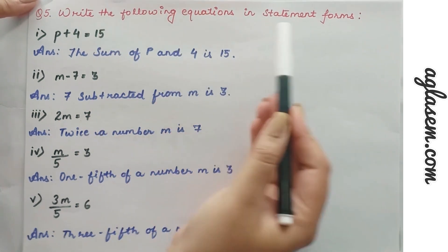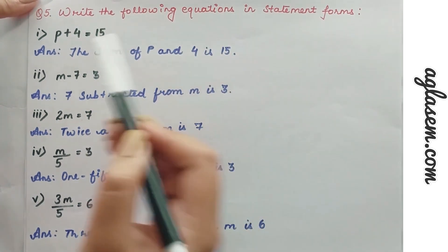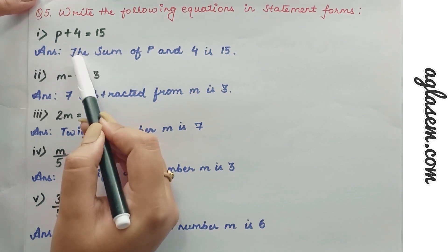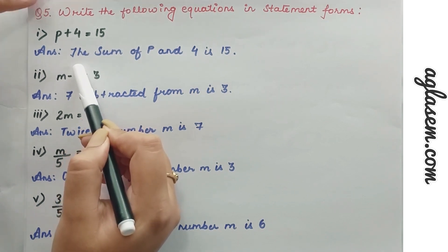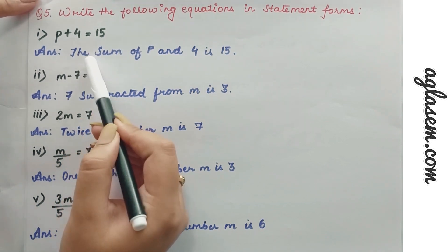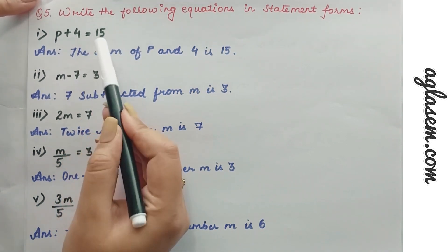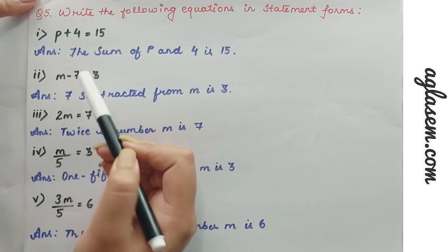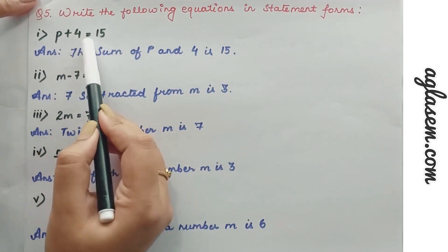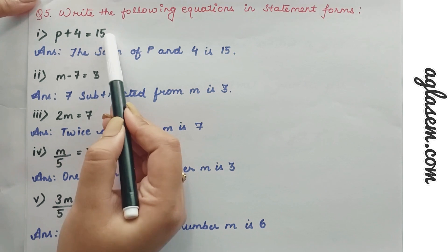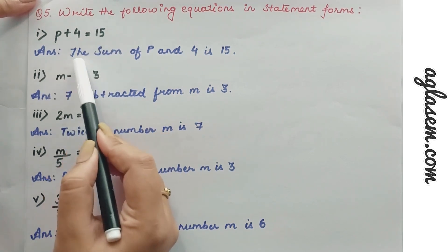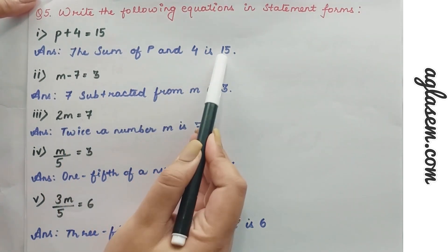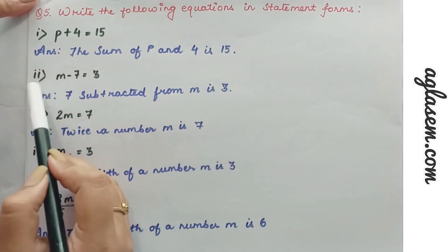Moving on to question number 5: write the following equations in statement forms. Here we are provided with the equations and have to do just the reverse of question number 4 — we have to write the statements for the provided equations. The first equation is p + 4 = 15, so the statement would be: the sum of p and 4 is 15.